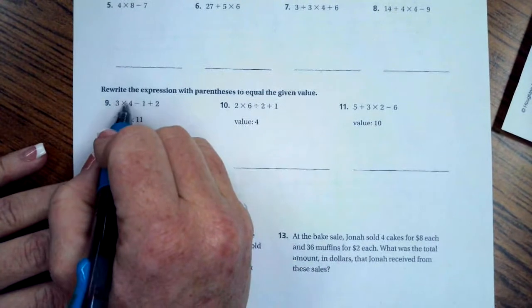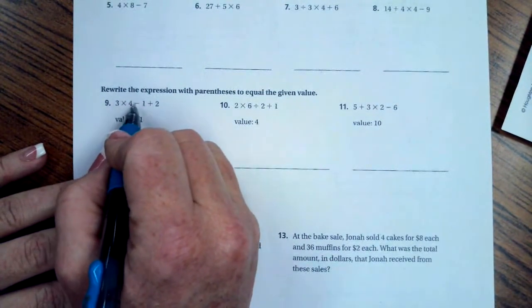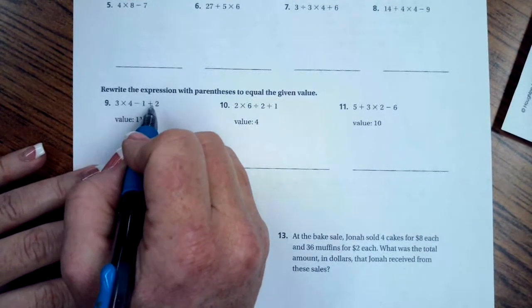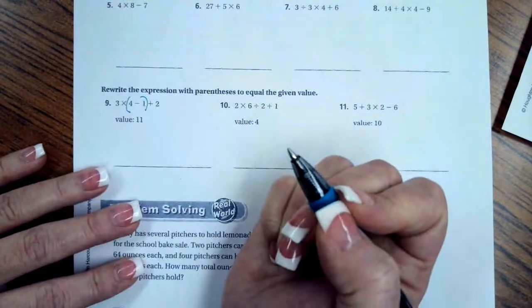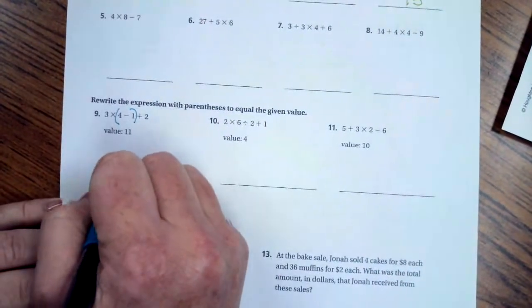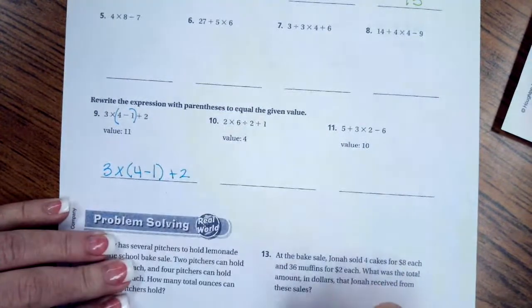So what if I do the parentheses around 4 minus 1? Then I have 3 times 3, which is 9, plus 2, which is 11. That's perfect. So I can do that. That's all you have to do. 3 times 4 minus 1 plus 2.